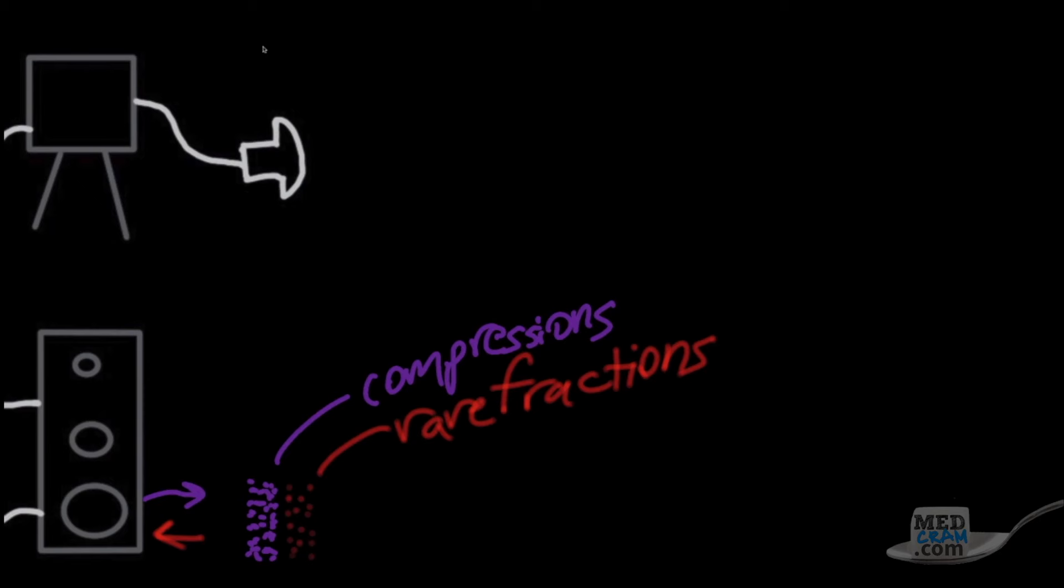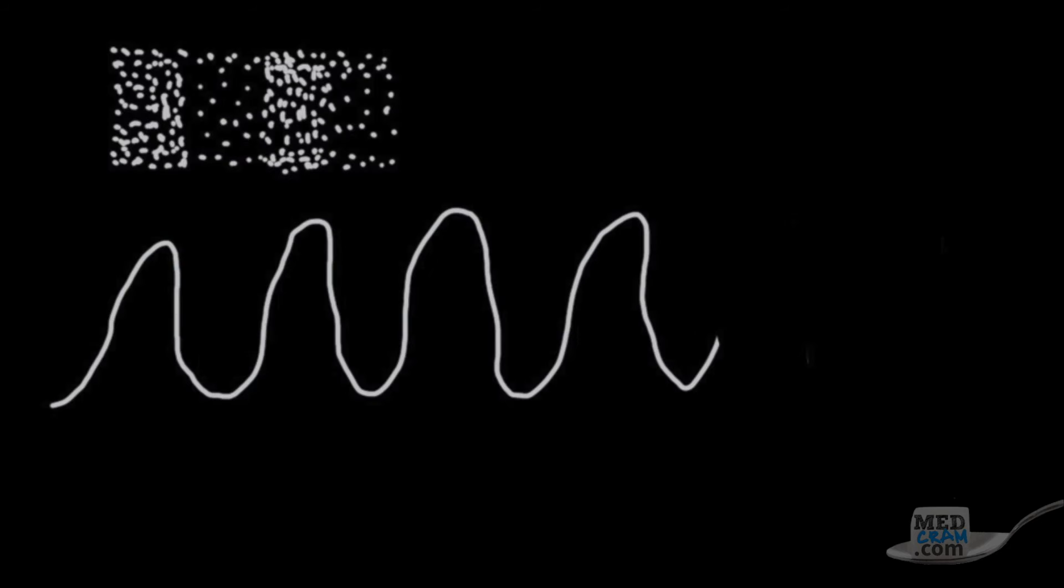For this course, we will illustrate compressions as a sound wave like this, and the space in between them as rarefactions. For us to discuss the characteristics of a sound wave, it's much easier to depict the compressions as peaks on a sine wave, and the rarefactions as troughs on a sine wave, although we understand that a sound wave is not a sine wave.